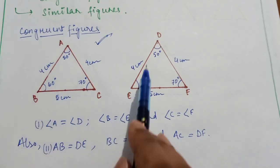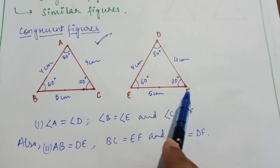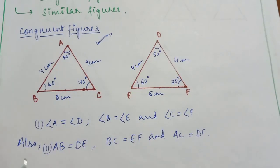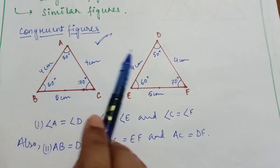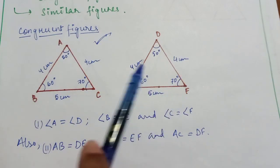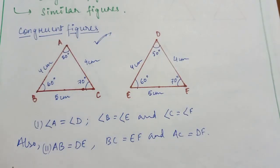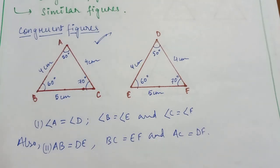So AB is equal to DE, BC is equal to EF, and AC is equal to DF. This is the condition that the corresponding angles of two triangles are equal and the corresponding sides are also equal. So these figures are congruent figures.